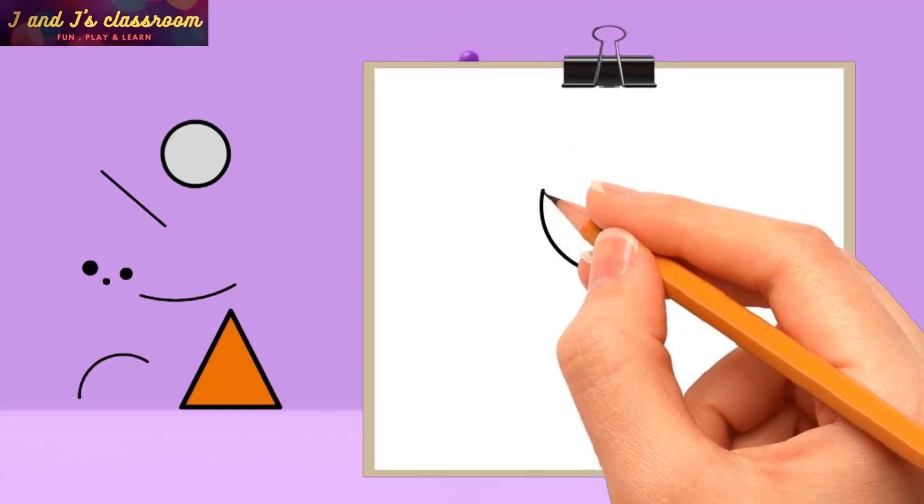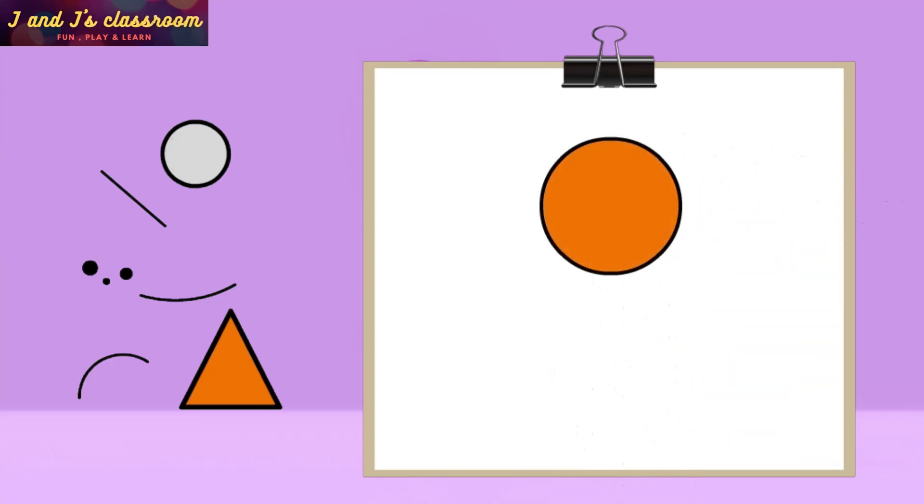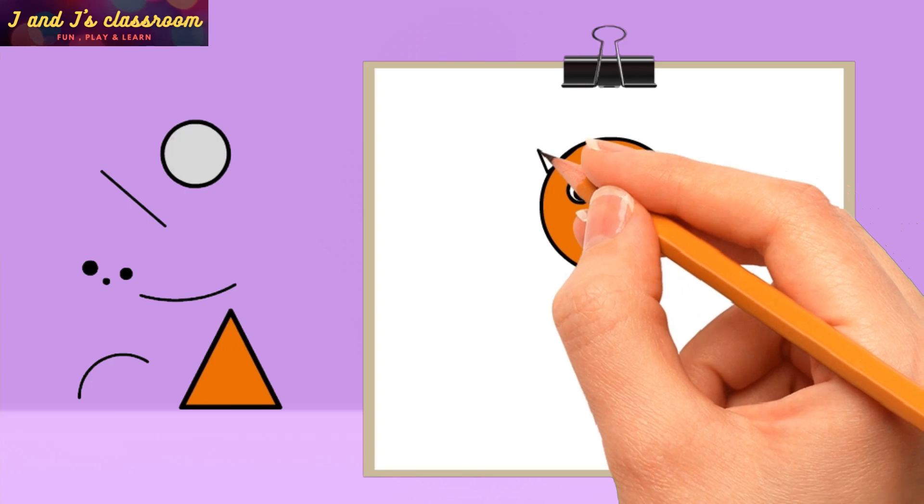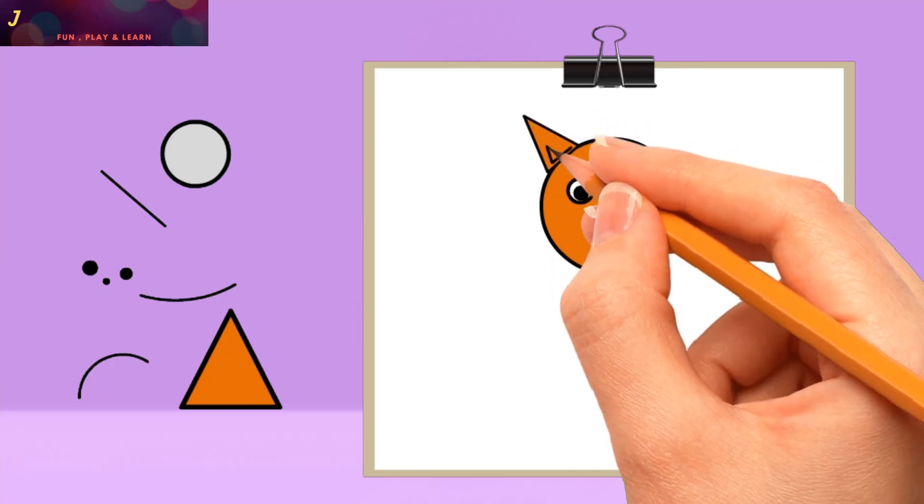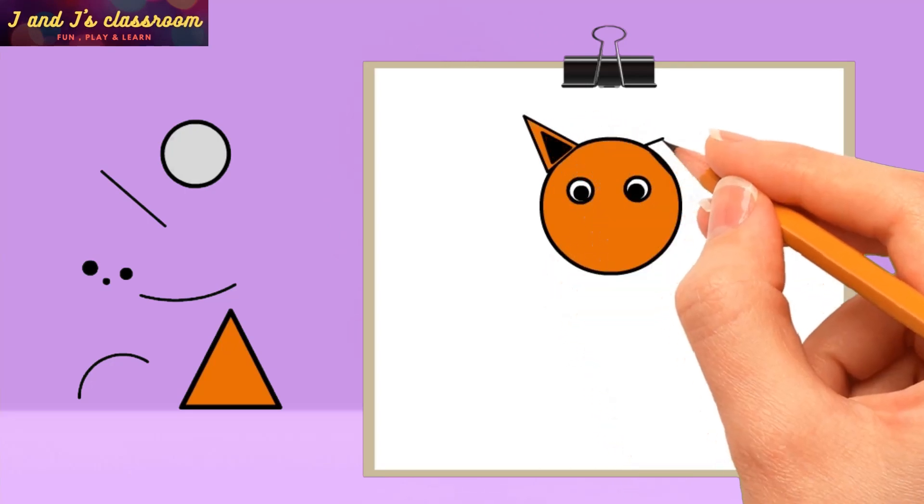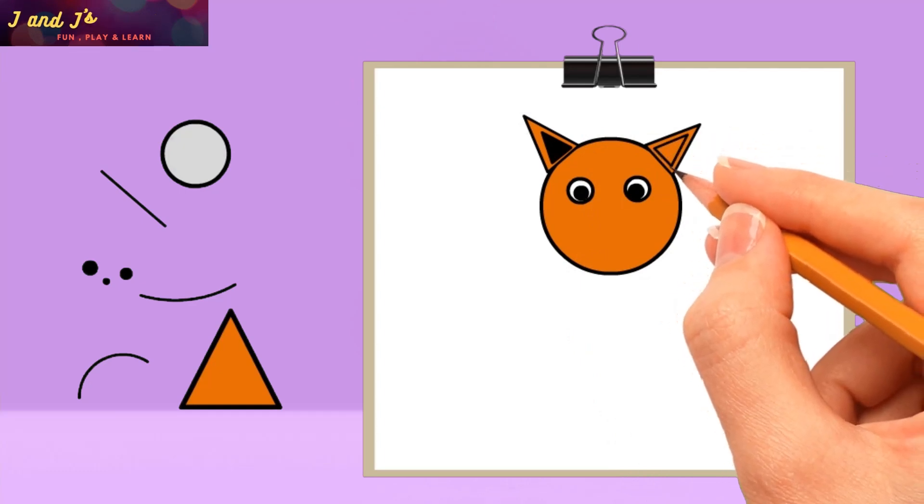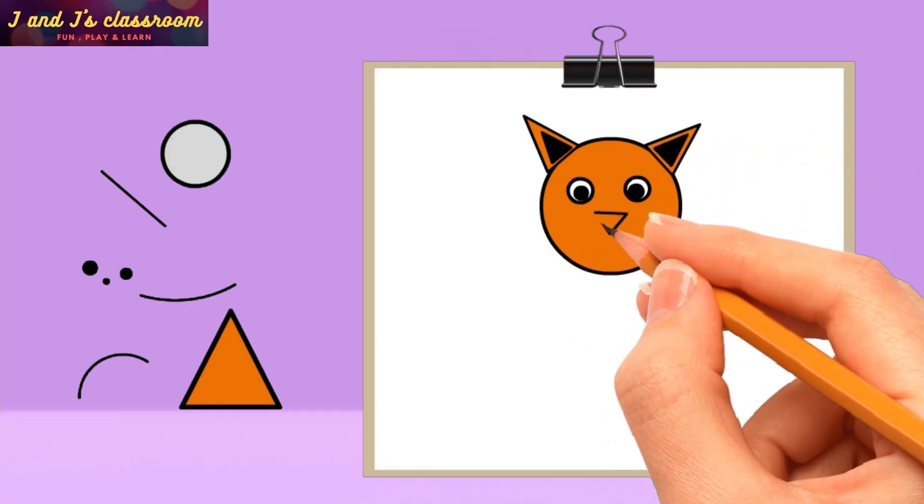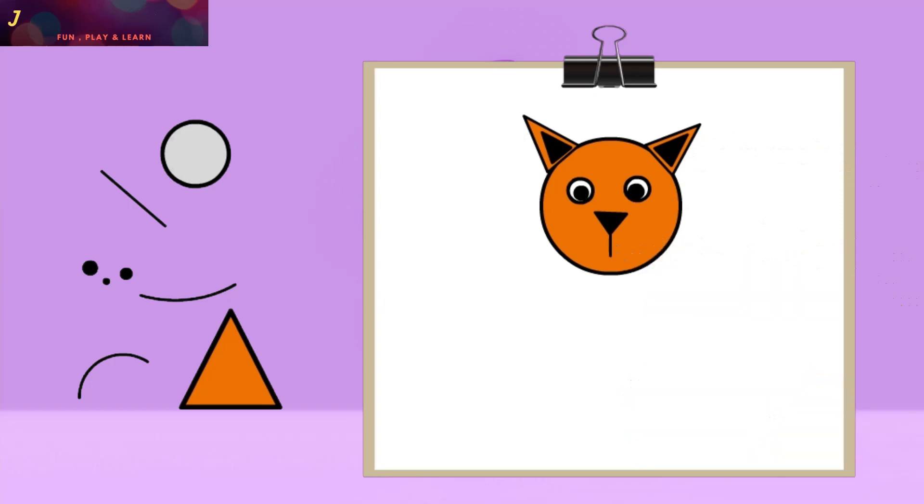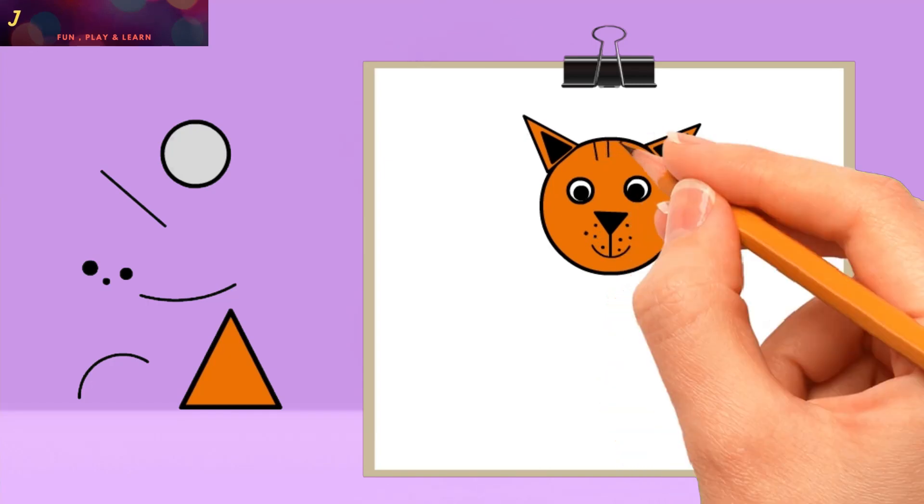Draw a big circle for the cat's face. And draw two circles for its eyes. Then draw two triangles for its ears. Next, draw a triangle for the nose and draw straight and curved lines for its mouth. Okay! Now put some dots near the mouth. Then draw some lines on the face for the skin pattern.